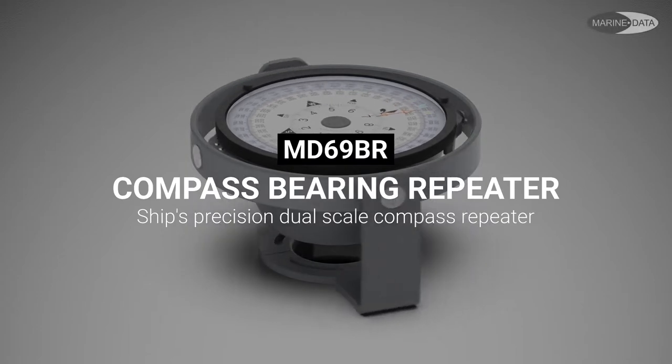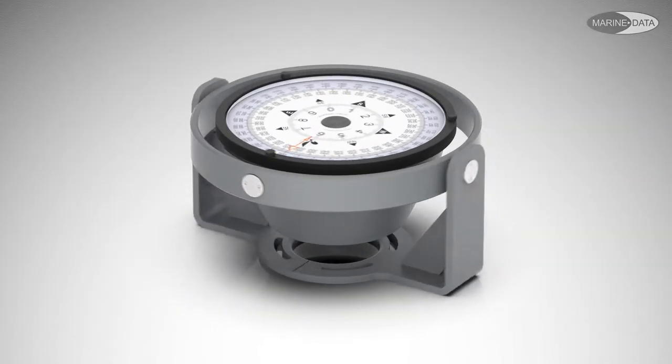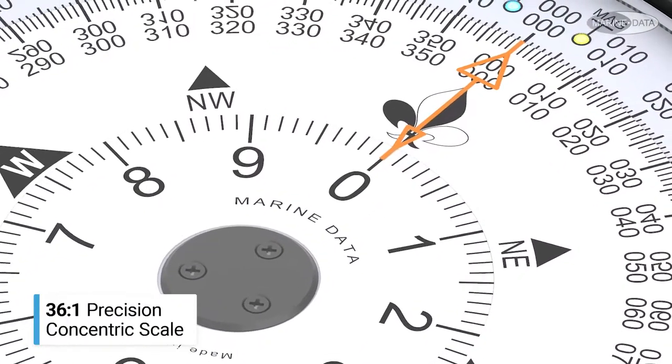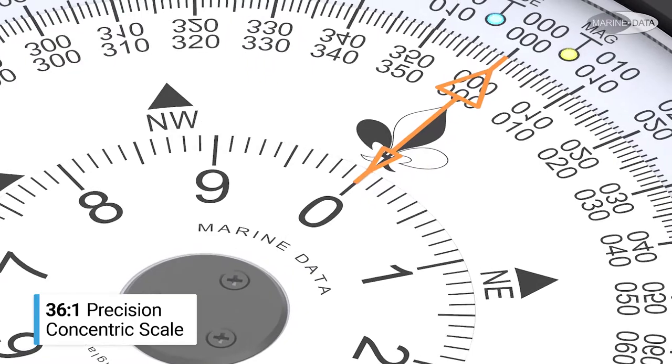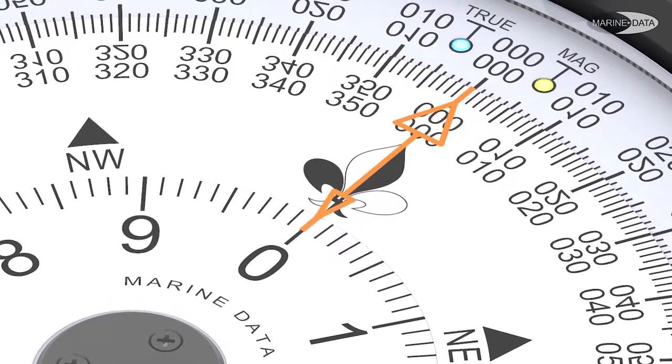The MD69BR Compass Bearing Repeater is the Mariner's preferred choice for taking celestial and terrestrial bearings. Featuring a dual scale 36 to 1 precision concentric scale also known as x10 x36 or twin speed.